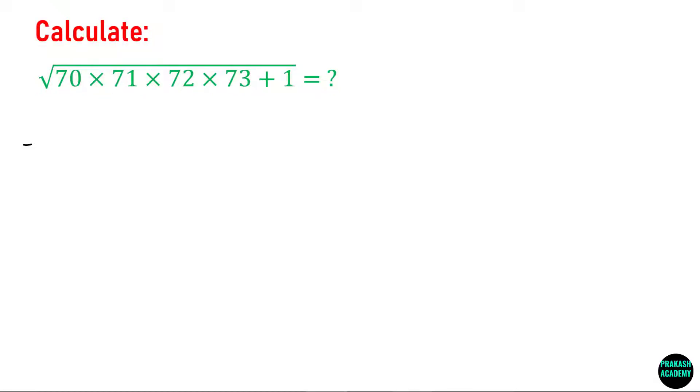In this problem we have to calculate the value of this expression: the square root of 70 times 71 times 72 times 73 plus 1. But you do not have to use the calculator. How will you solve this problem?